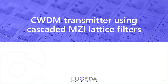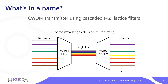Hi and welcome to Lucida Academy. Today we are going to learn how to design CWDM transmitters using cascaded MZI lattice filters. A CWDM transmitter is a component based on wavelength division multiplexing — a technology that uses different channels to carry signals at different wavelengths, which are then combined in a single optical fiber or waveguide simultaneously.